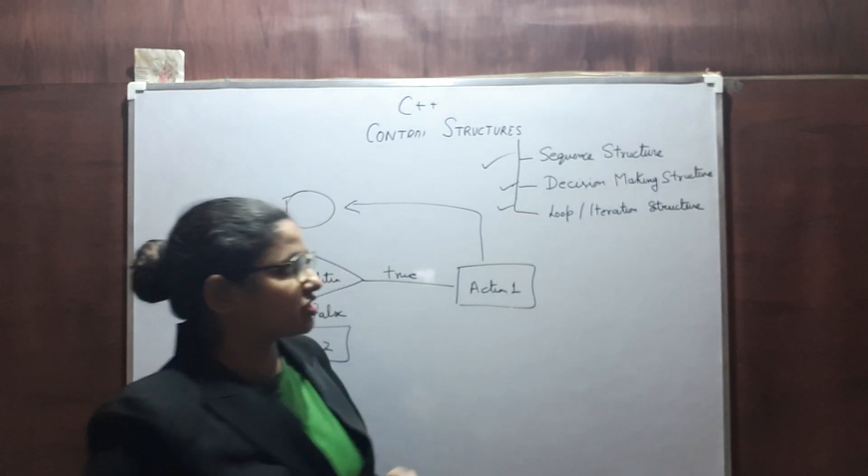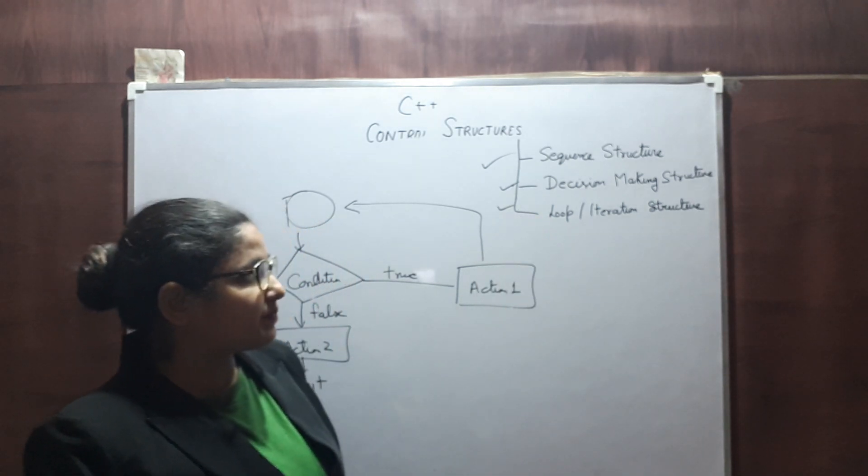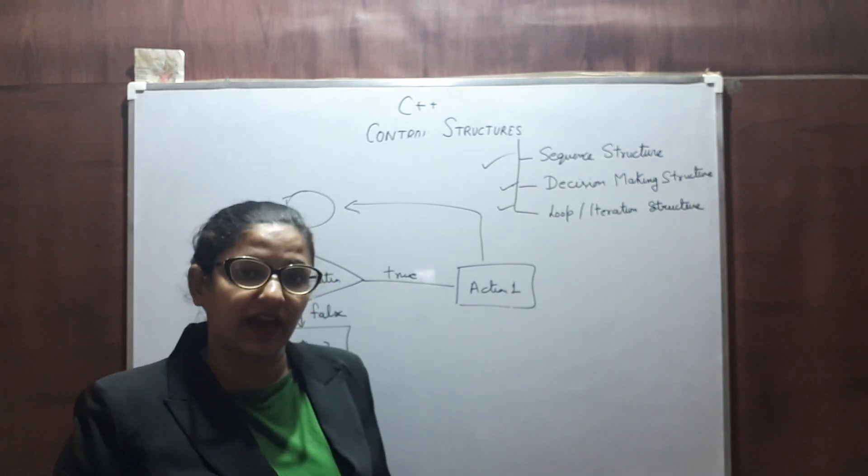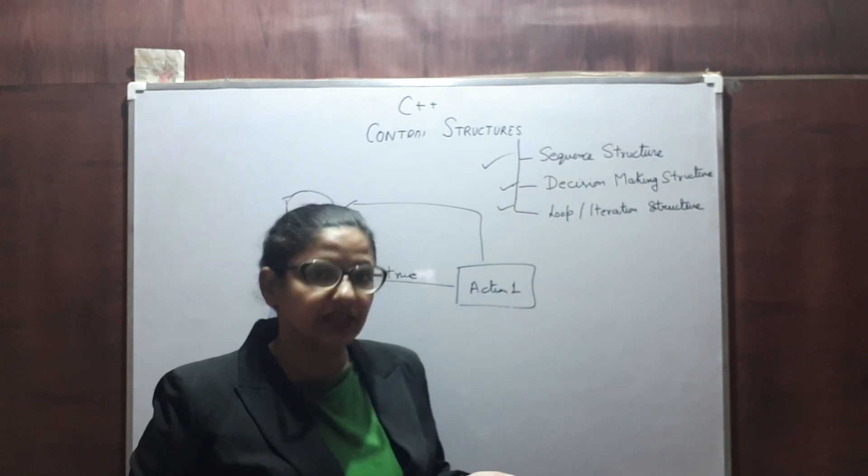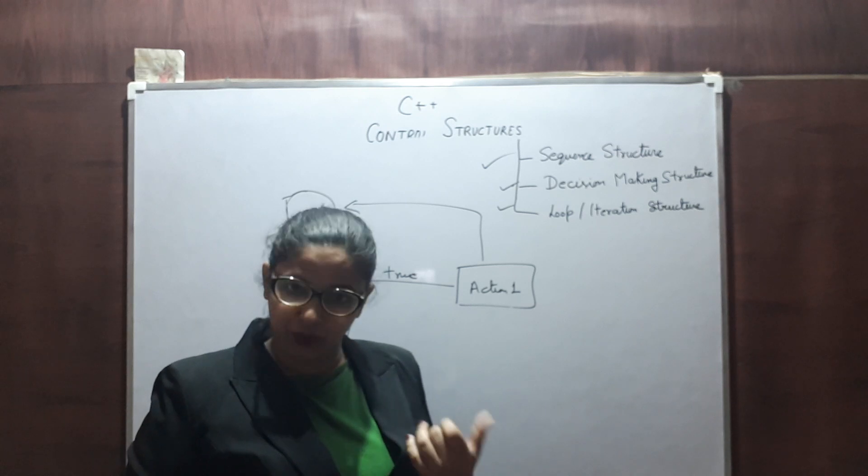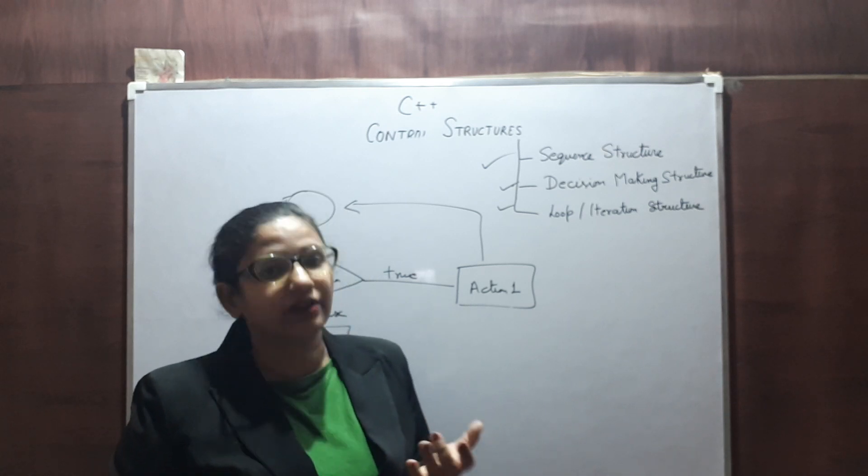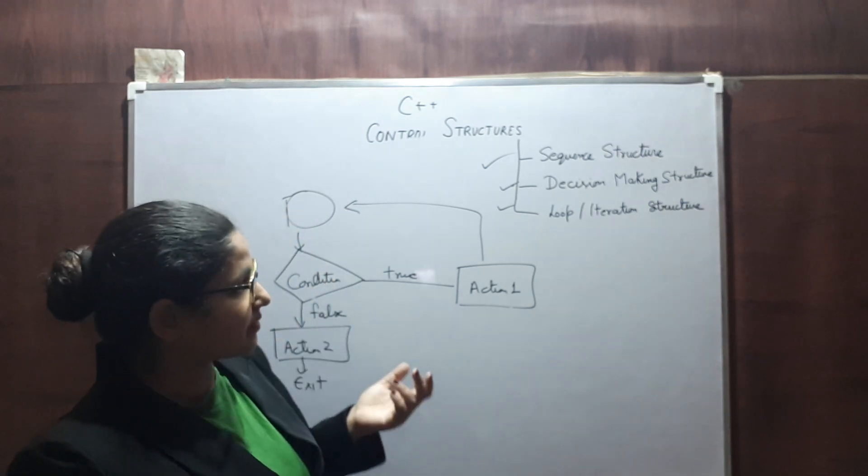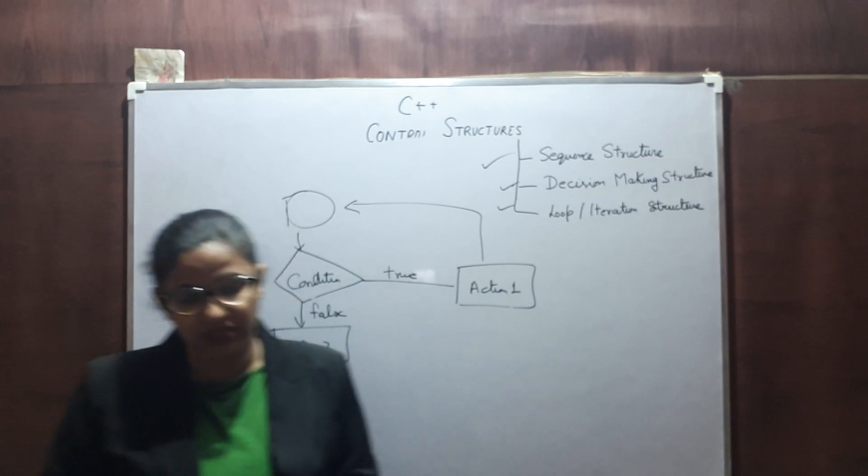So this is our loop or iteration structure. In C++ for decision making we have if, if else, switch. And for loop or iteration we have do while, while, and for. We will study them in our further videos. Thank you.